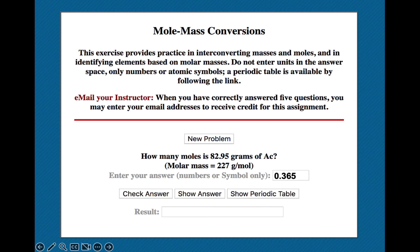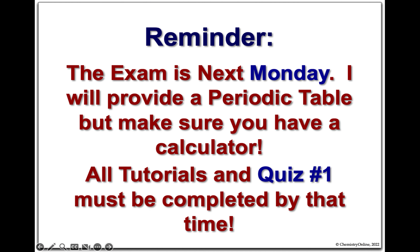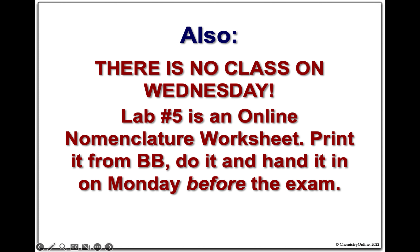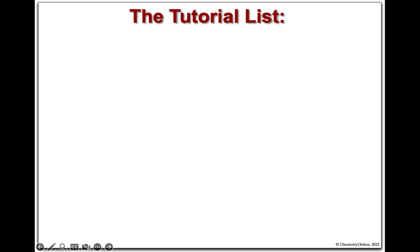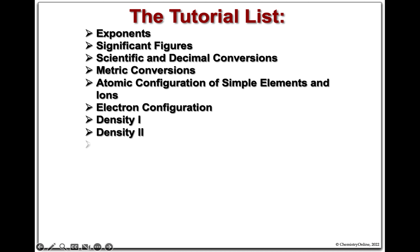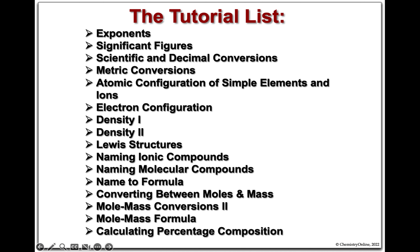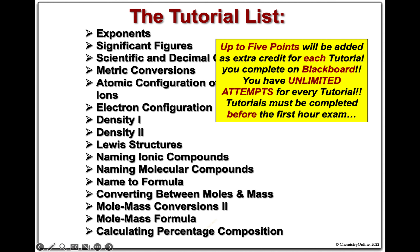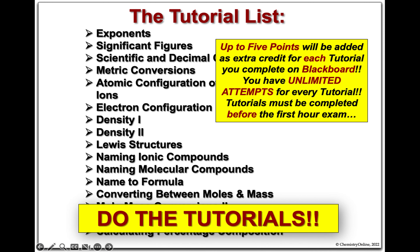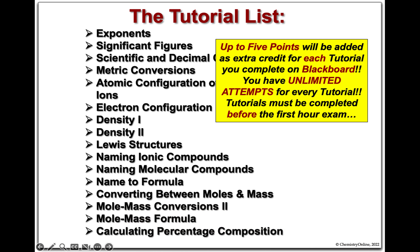I told you it would be short. Exam is Monday. Everyone gets a periodic table; make sure you have a calculator. Tutorials and a quiz must be completed by that time. No class Wednesday. Lab 5 is online — print the worksheet, hand it in on Monday before the exam. Please do the tutorials — you get up to five points each, that's a lot of points. If you did not hand in your sample exam, please do it now.